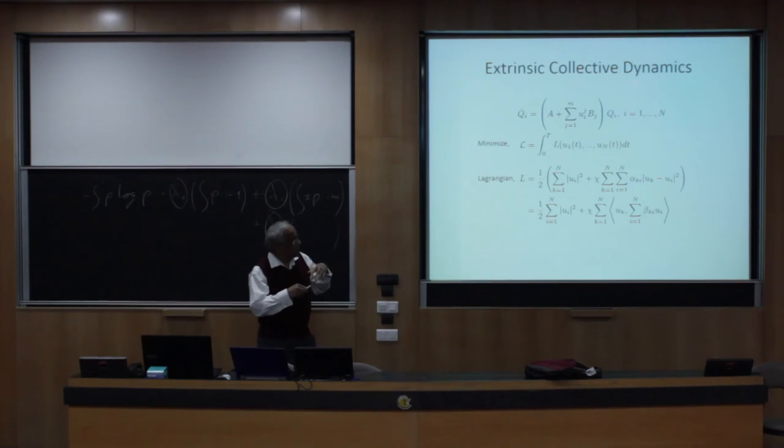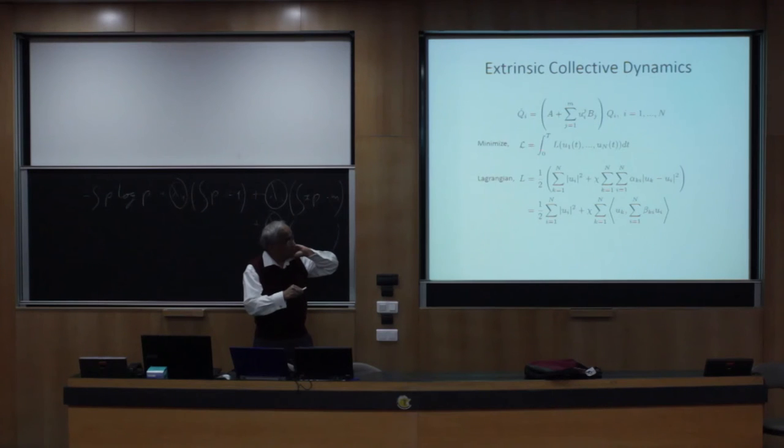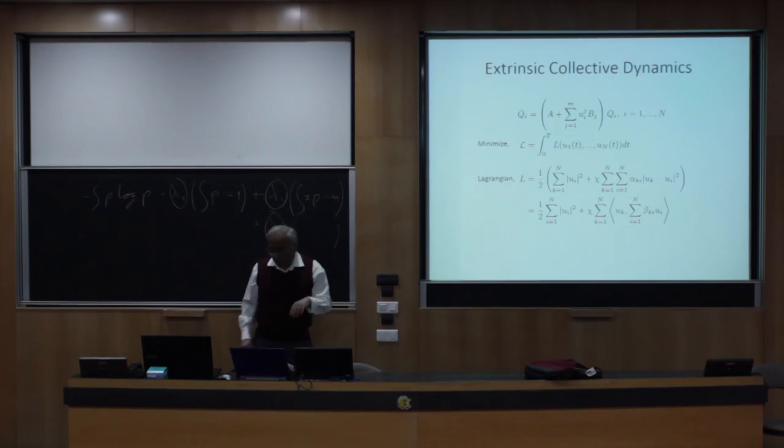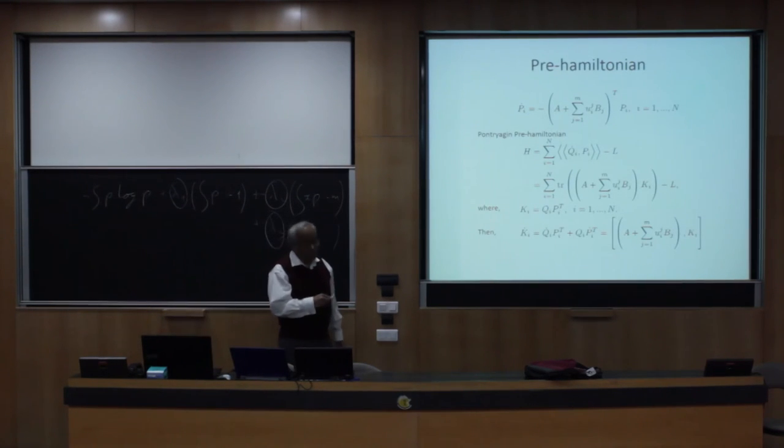So what does the problem look like for Brockett? He wrote it in this right-invariant form. So it looks like we have a matrix equation evolving on a matrix Lie group with controls. He did not have the second set of indices, i, because he was only studying one copy of the group. The first set of indices, j, corresponds to having controls, m controls per system. So I extend that story to involve n copies, but once again we have the product group setup and the same kind of cost functional as before.